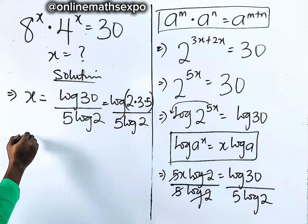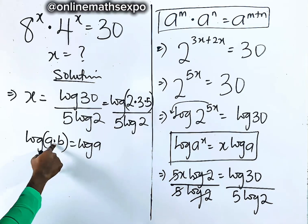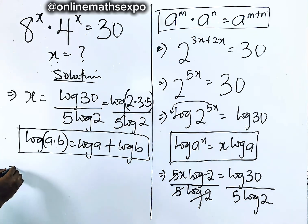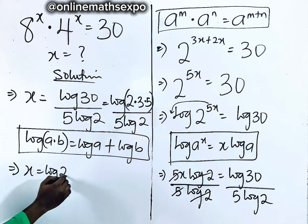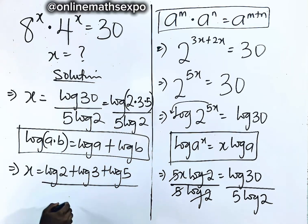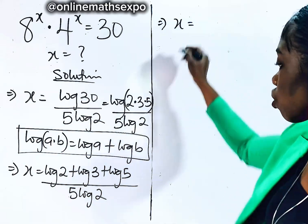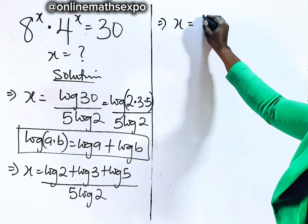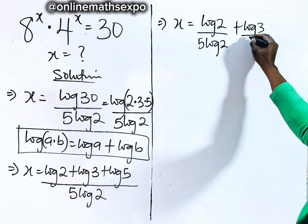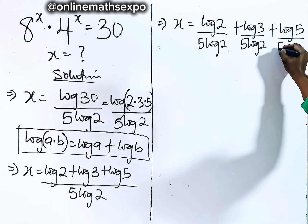Now remember: for every log of a multiplied by b, it is log a plus log b — multiplication inside the log comes to addition. So applying this rule, we have x is equal to log 2 plus log 3 plus log 5, all divided by 5 log 2. Keep solving: divide each term in the numerator, giving us log 2 over 5 log 2, plus log 3 over 5 log 2, plus log 5 over 5 log 2.